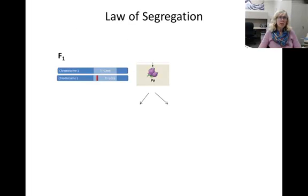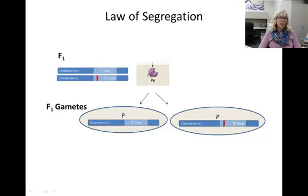We started this unit by talking about single traits like flower color. An organism has two alleles of each gene that controls the phenotype. When an organism creates gametes by meiosis, only one of each homologous chromosome ends up in each gamete. This is called the law of segregation. Two alleles segregate into separate gametes.